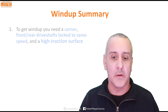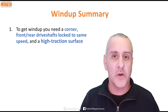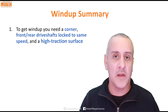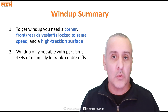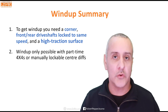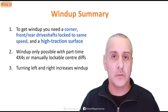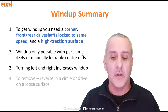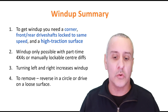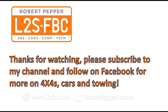To summarise wind-up: to get it you need a corner, front and rear drive shafts locked to the same speed, and a high traction surface. Wind-up is only possible with part-time four-wheel drives or those with manually lockable centre diffs — not with computer-controlled centre couplings. Turning left or right both increase wind-up. To remove it, reverse in a circle or drive on a loose surface. Thanks for watching — please subscribe for more explanations on four-wheel drives, cars, towing, and more.